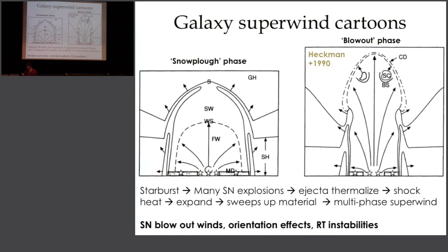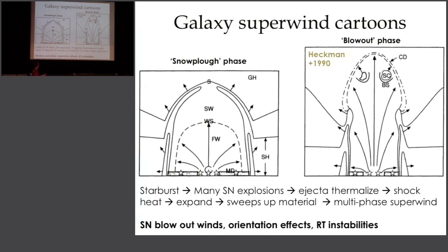This is the structure of galaxy winds as proposed by Heckman, Armas, and Miley around 1990. You have a galaxy disk with lots of star formation in a nuclear starburst-type environment. Many supernovae collide in the central regions; their ejecta from winds and supernovae collide, and the gas shock-heats to be extremely hot — almost 10^8 Kelvin — and this expands adiabatically, blowing out away from the central region. Here you have wind shock heating dragging up other material.